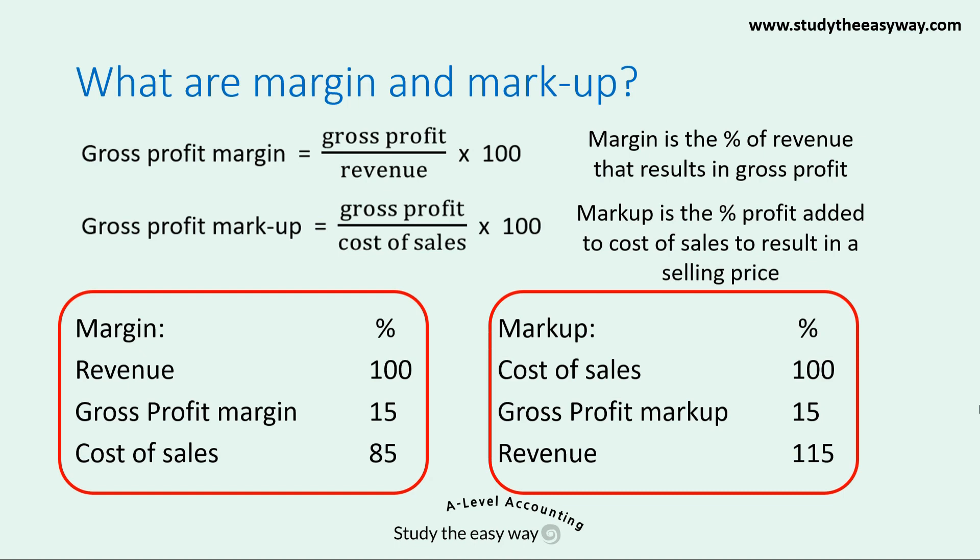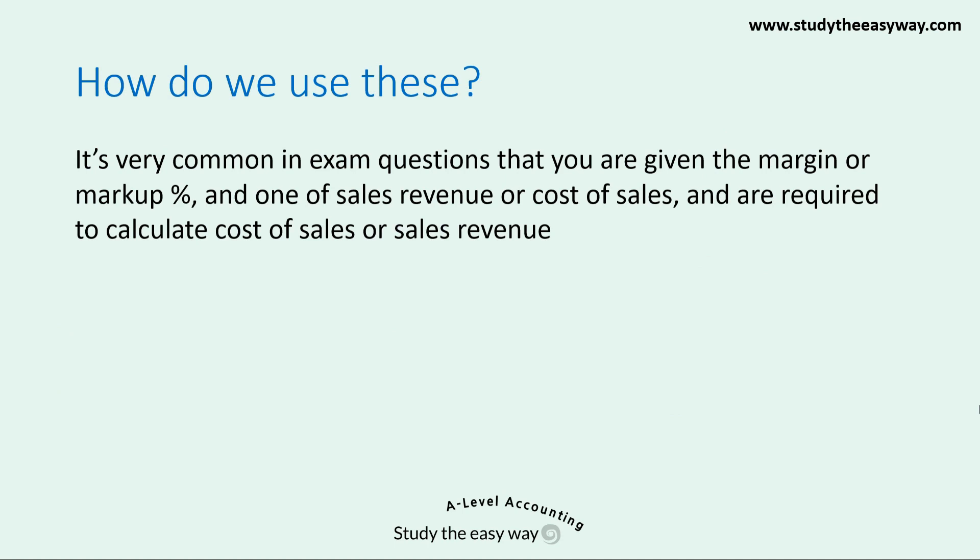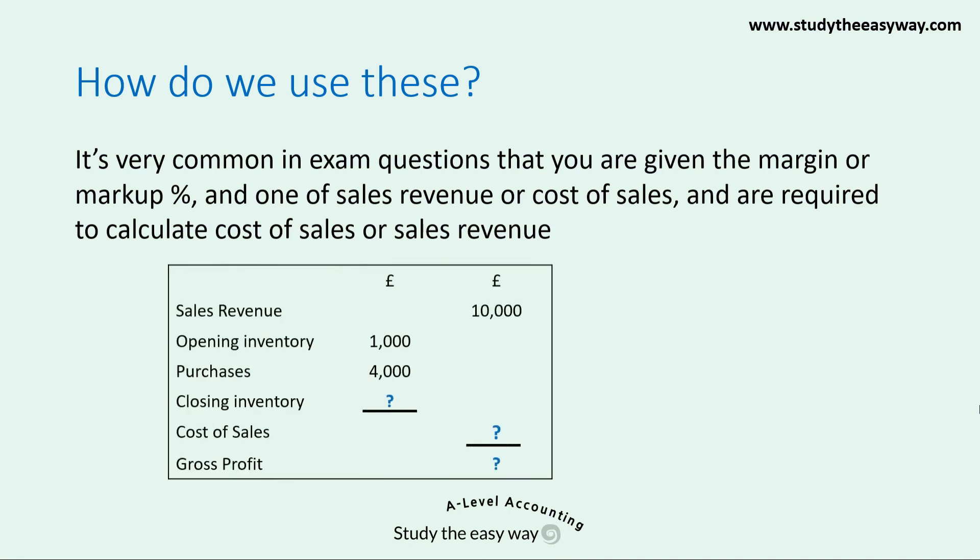So pause the video, jot these down, and make sure you're familiar with them. It's very common in exam questions on the incomplete records topic that you're given the margin or markup percentage and one of the sales revenue or cost of sales figures, and then you're required to calculate the other. This can help you to calculate other missing figures.